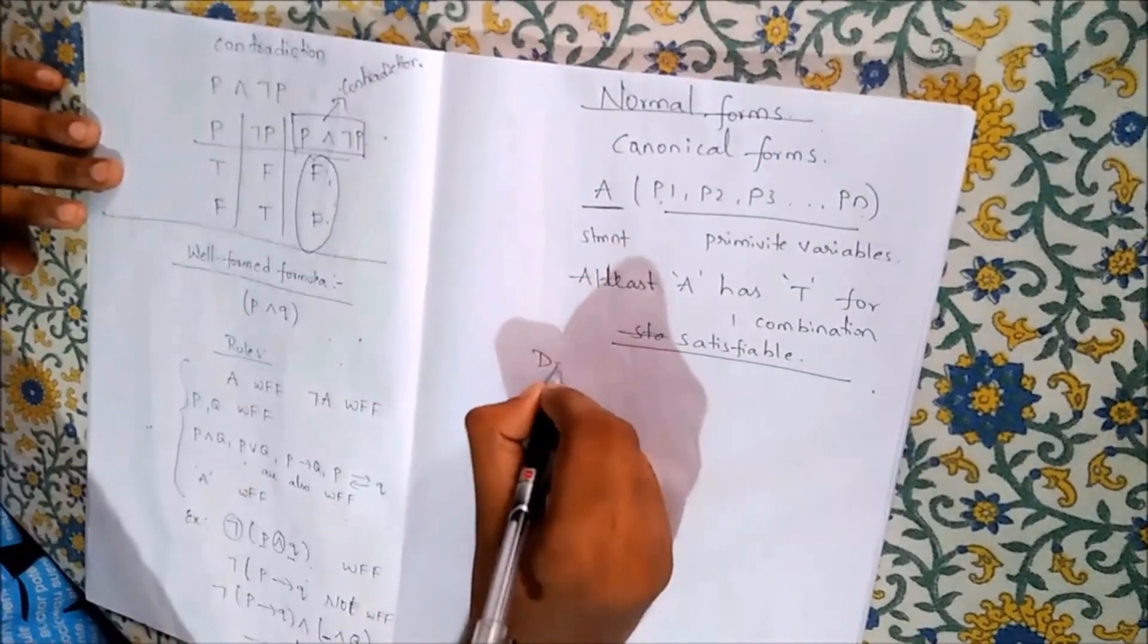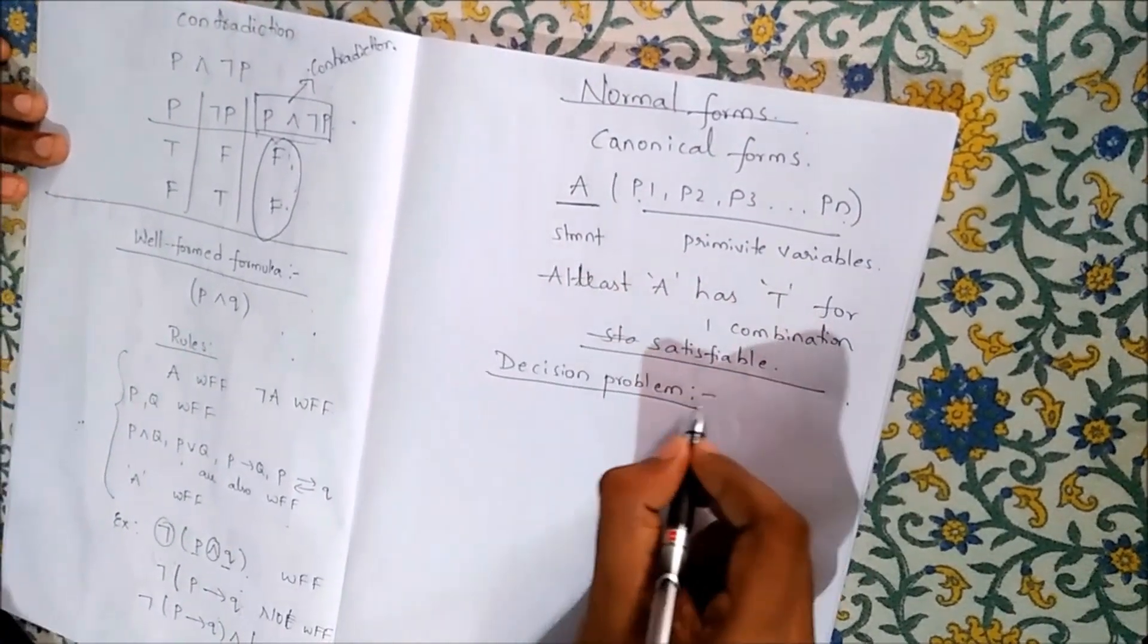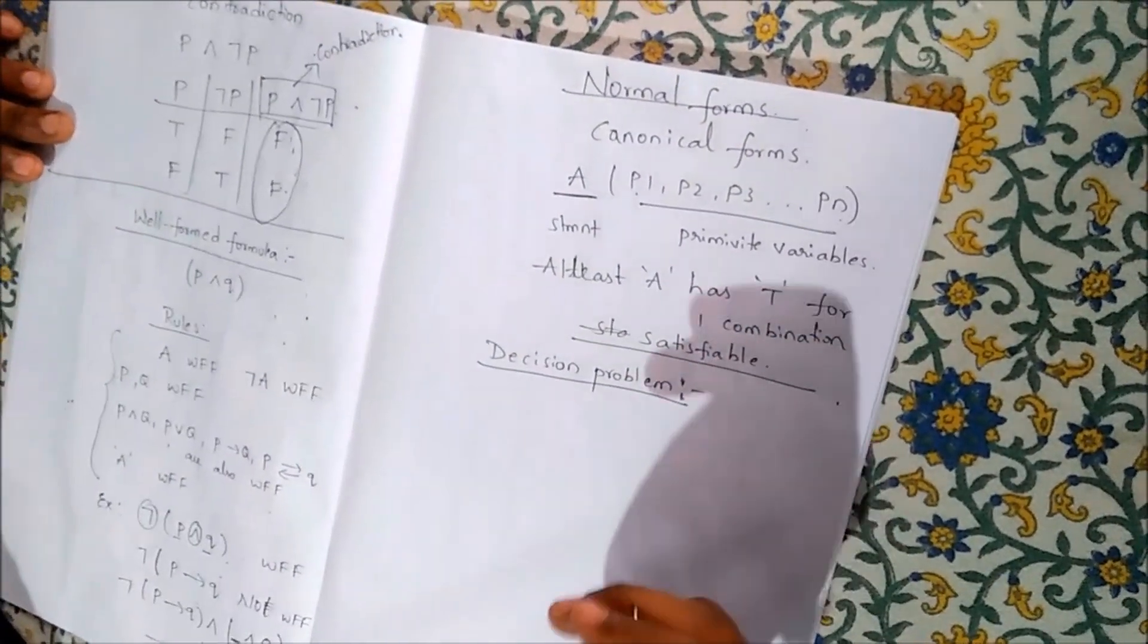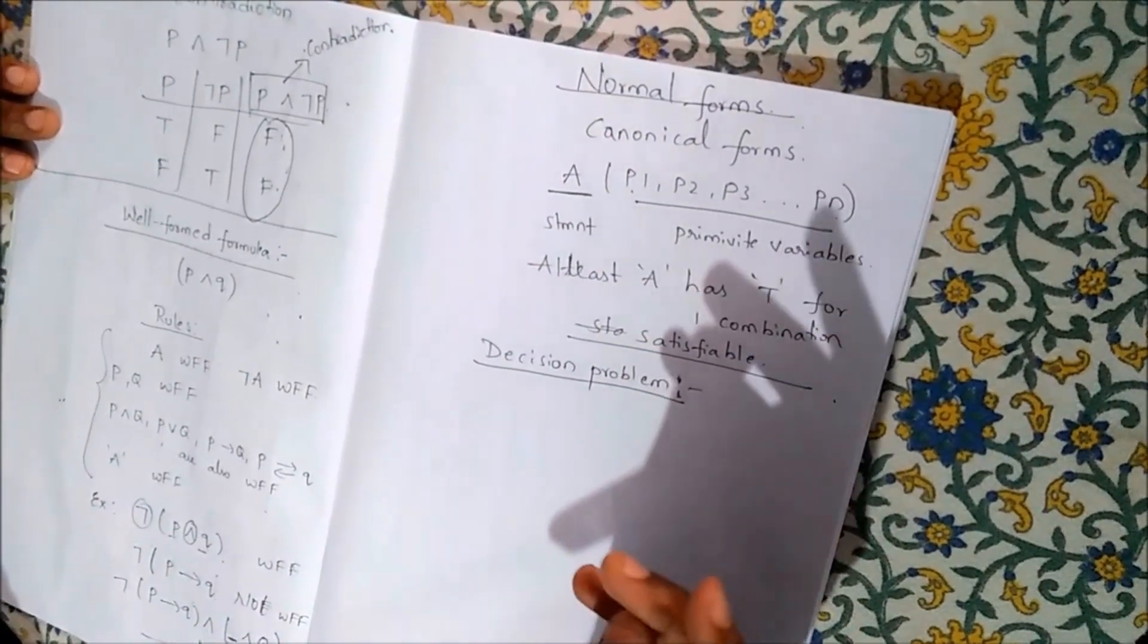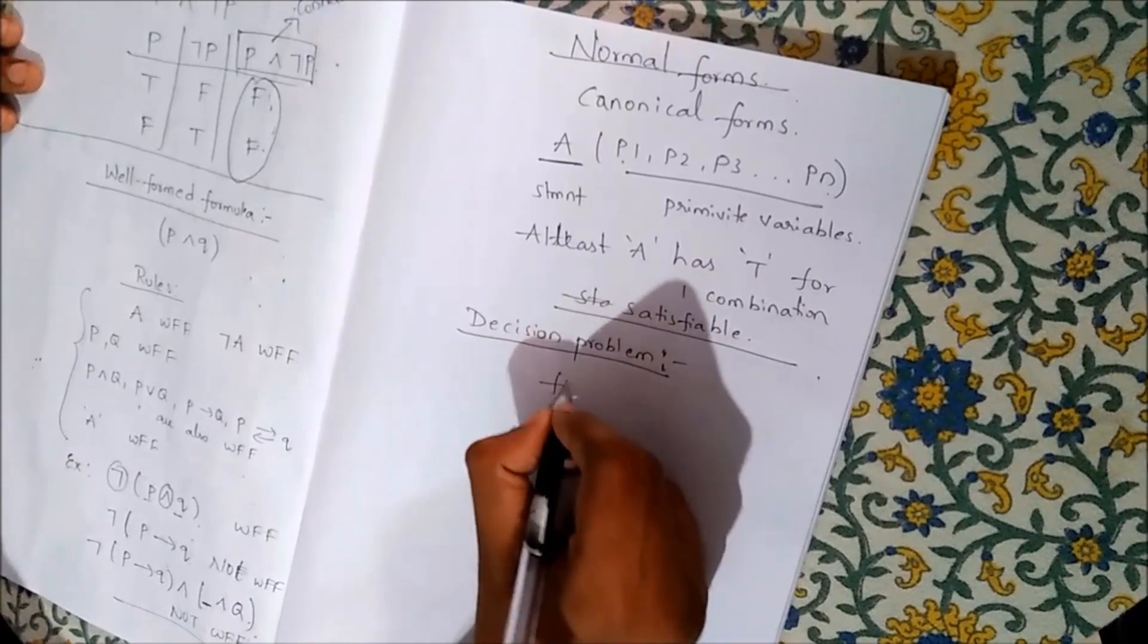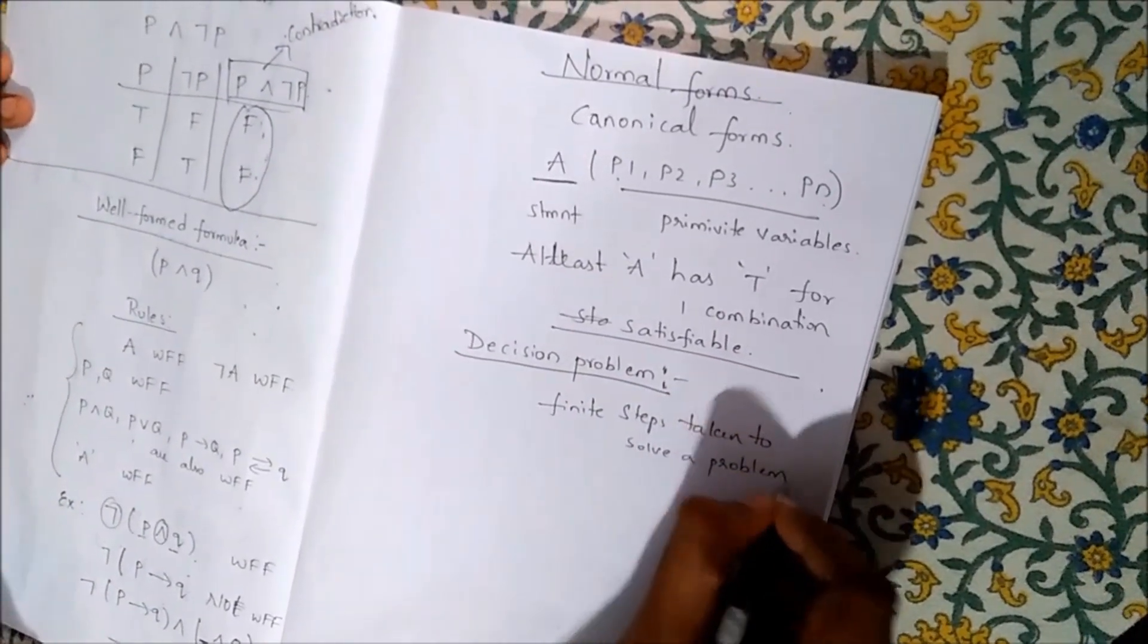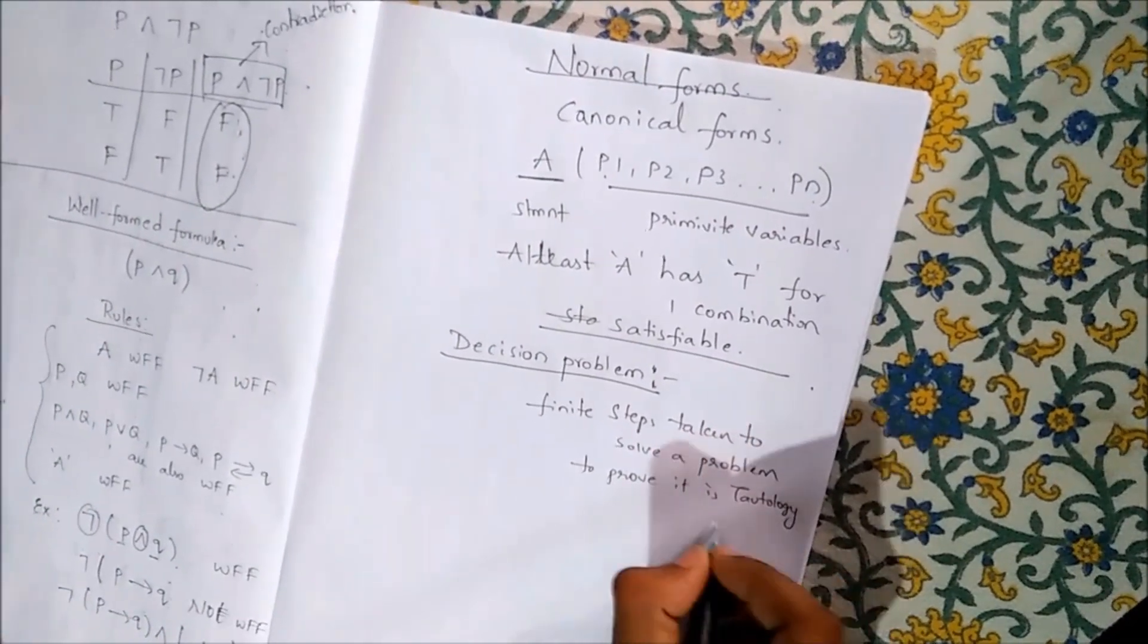Now coming to decision problem. We will solve any problem, we will follow a number of steps, we will do a concept of tautology and contradiction. Decision problem means finite steps taken to solve a problem.